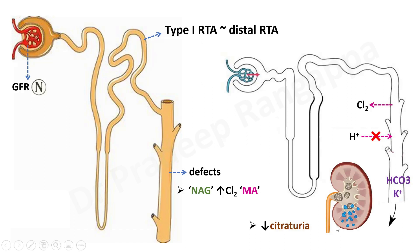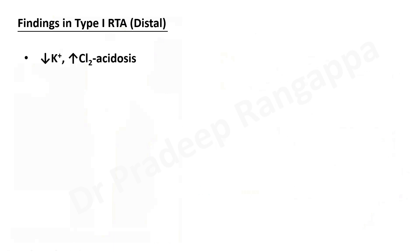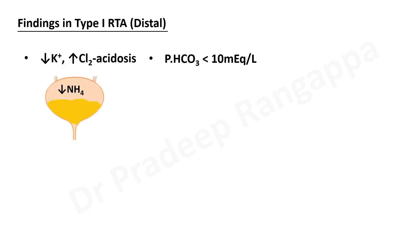Type 1 is distal — the problem arises in the distal convoluted tubule. In all renal tubular acidoses, the pathognomonic feature is hyperchloremia due to increased chloride reabsorption. In distal RTA, bicarbonate and potassium are excreted in the urine, causing hypokalemia and hyperchloremic acidosis. Type 1 and type 2 have hypokalemia, while type 4 has hyperkalemia. Bicarbonate can be less than 10 mEq/L.